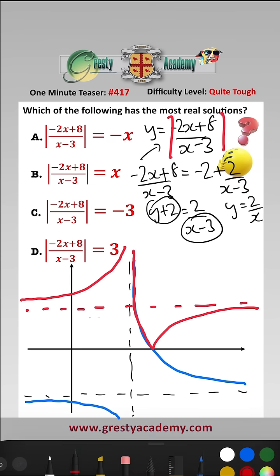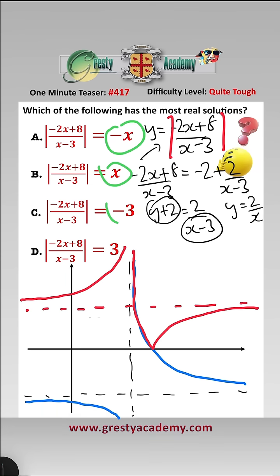And now what we need to do is draw each one of these and see how many solutions there are. Well, y equals minus x would be that. And clearly there is only one solution. Y equals x is that. And again there is only one solution.